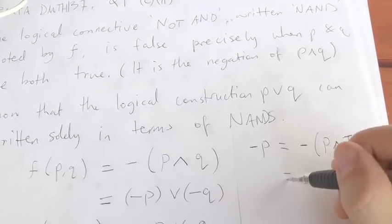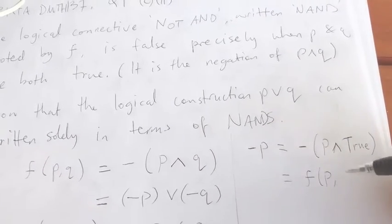I'll just write the word true. So the negation of P is actually equal to NAND of P and true.